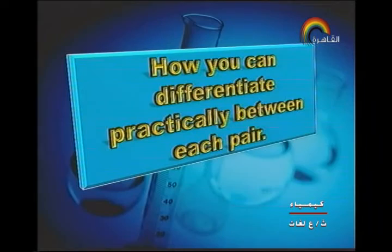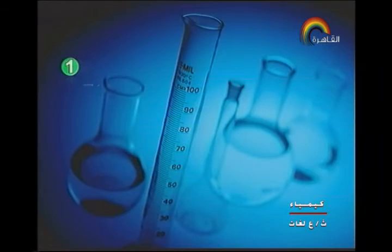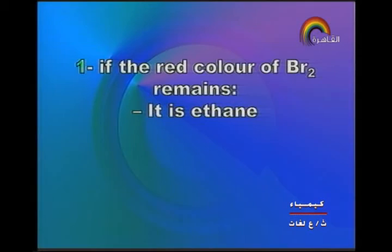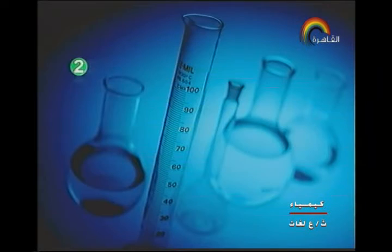Next type of question: how can you differentiate between each of the following pairs? Ethane and acetylene — this is done by adding red bromine water. If the red bromine color remains, it is ethane; if the red color is decolorized, it is acetylene.